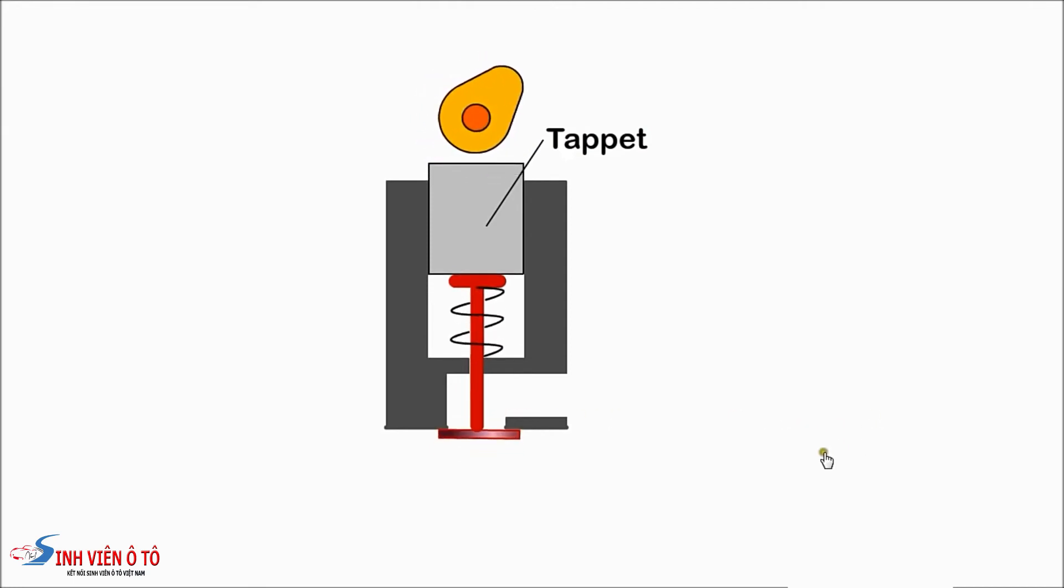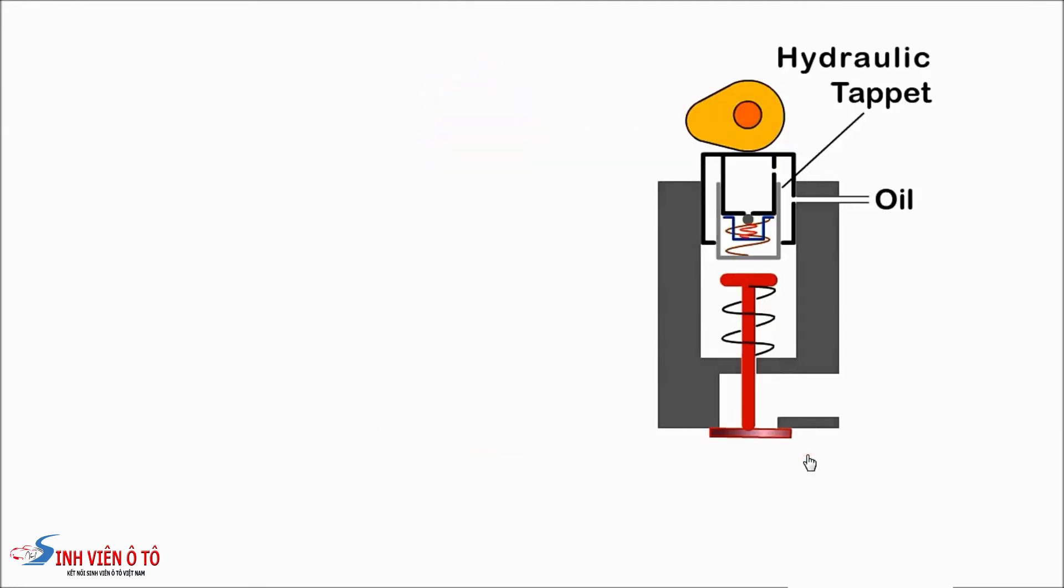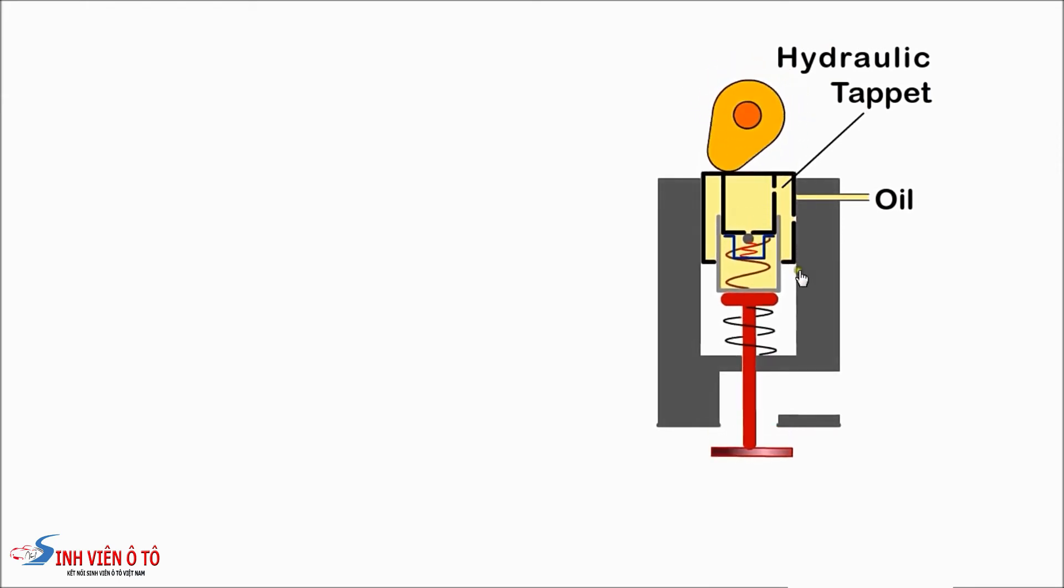A further development is the hydraulic tappet. This tappet is extended by high pressure oil through a non-return valve. The tappet will occupy the available space between the cam and the valve, thus eliminating any noise as the cam strikes the tappet.